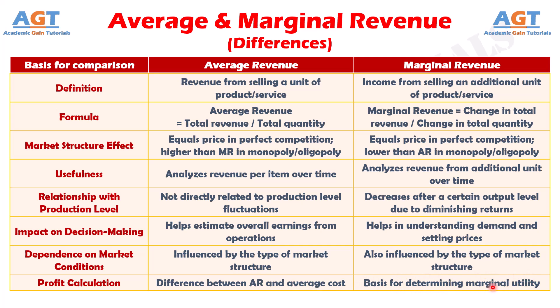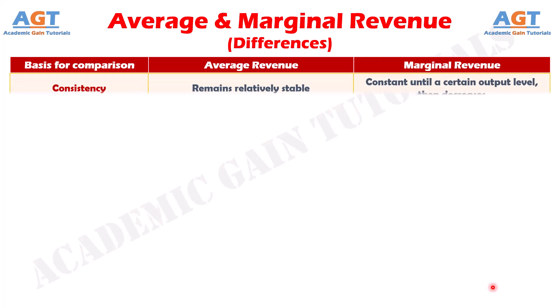Number nine: average revenue remains relatively stable, whereas marginal revenue remains constant until a certain level of output and then starts decreasing.